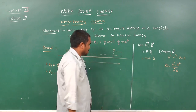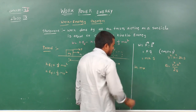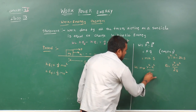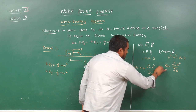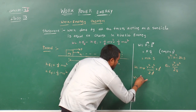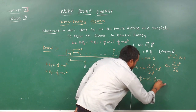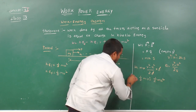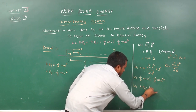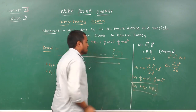Substituting acceleration into the work equation: work = m × (v² − u²)/2s × s. The s cancels, giving work = ½mv² − ½mu², which equals final kinetic energy minus initial kinetic energy. This completes the proof of the work-energy theorem.